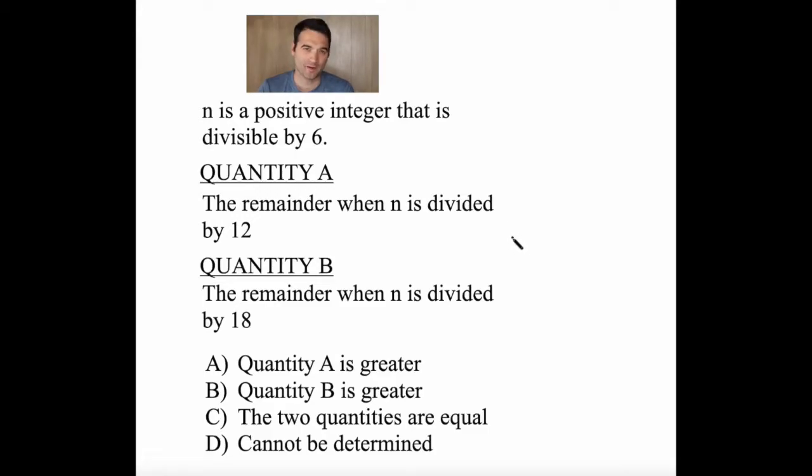So here's a GRE quantitative comparison question. We're told that n is a positive integer that's divisible by 6, and we want to figure out what's greater, quantity A or quantity B.